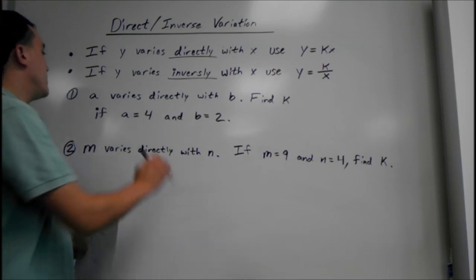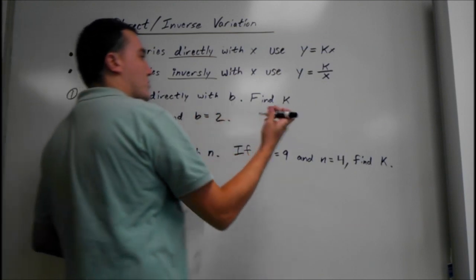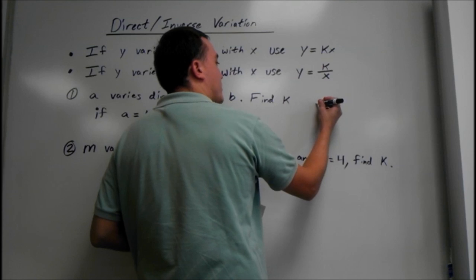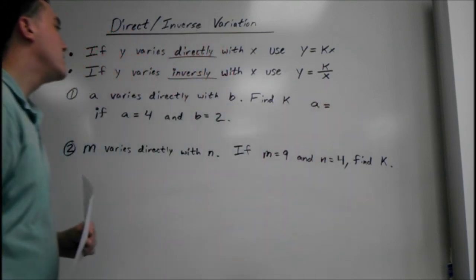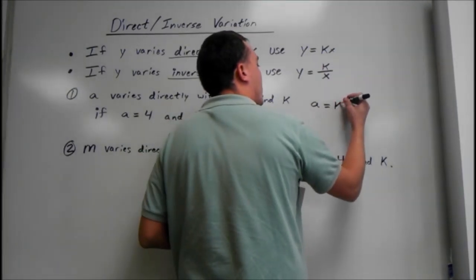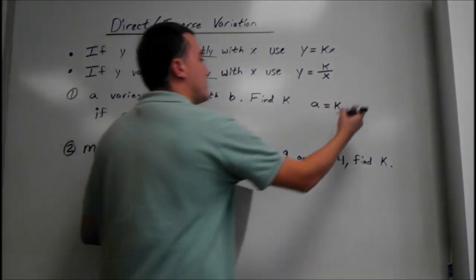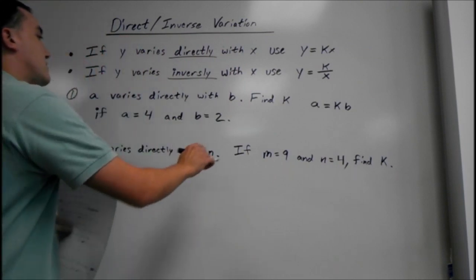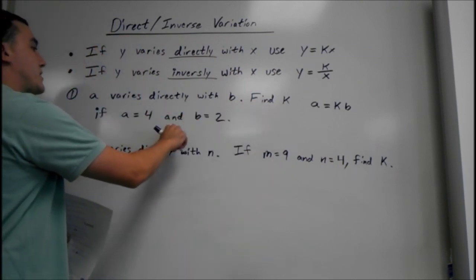Say we have: a varies directly with b. So we're going to set up the equation first. A varies directly with b, so a equals k times b — k is always going to be our constant in these cases. And it says find k if a equals 4 and b equals 2.